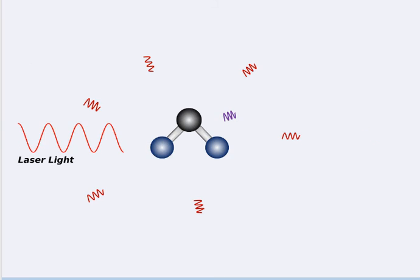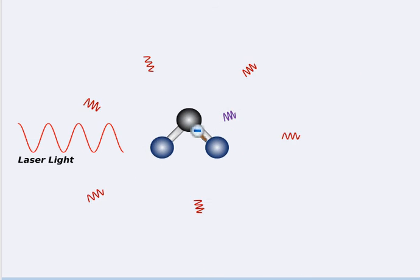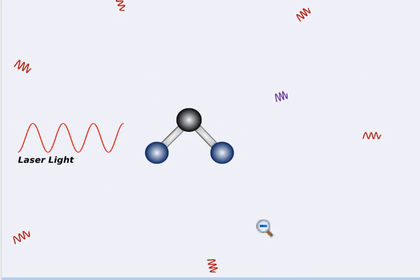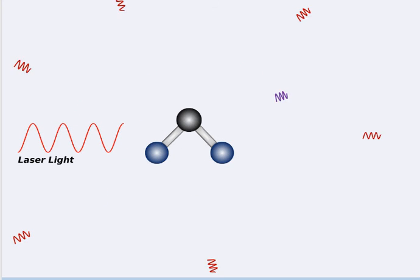These frequencies correspond to the mode of vibration being observed. In this particular molecule, there are at least two other modes of vibration that could occur: an asymmetric vibration, or these two atoms could nod or rotate backwards and forwards. Each molecule has its own unique set of vibrations, and therefore a unique set of frequencies that can be used to identify it.